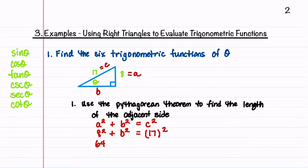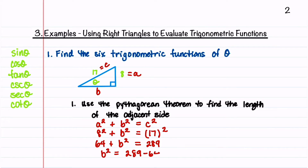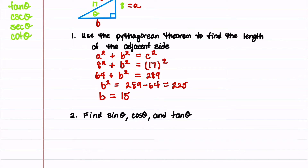So 64 plus B squared equals 289. We then isolate B squared by subtracting 64 from both sides, so we have 289 minus 64, which gives us 225, which is a nice number because the square root of 225 is 15. Let's go ahead and add B to our diagram: B is equal to 15.